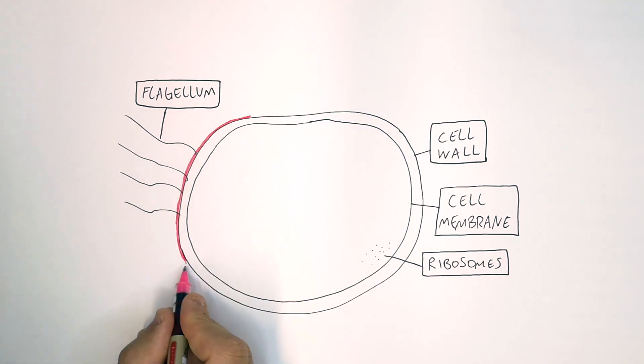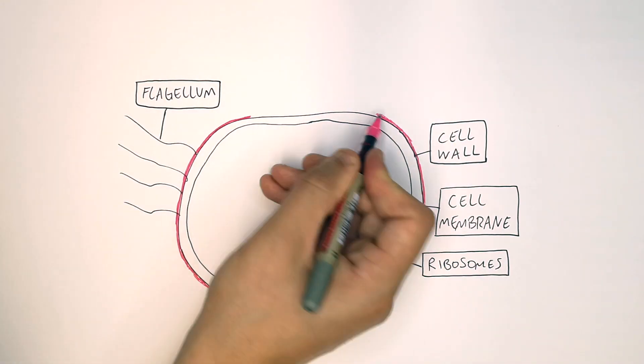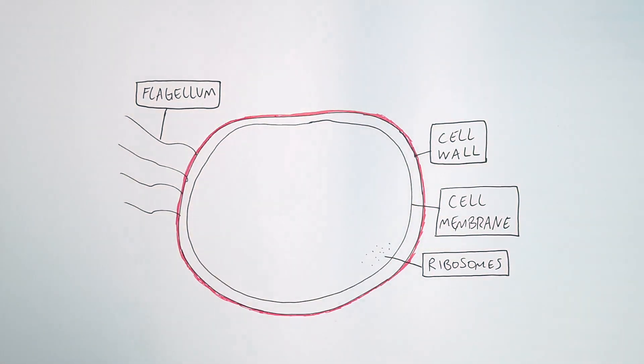The bacterial cell has a slime coat that covers the entire outside of the bacteria. That protects it from any toxic environment it's in.